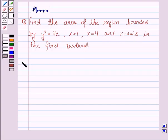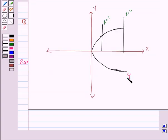Let's move on to the solution. We have to find the area bounded by the parabola y² = 4x, the line x = 1, x = 4, and the x-axis. So this is the parabola y² = 4x, this is the line x = 1, and this is the line x = 4.